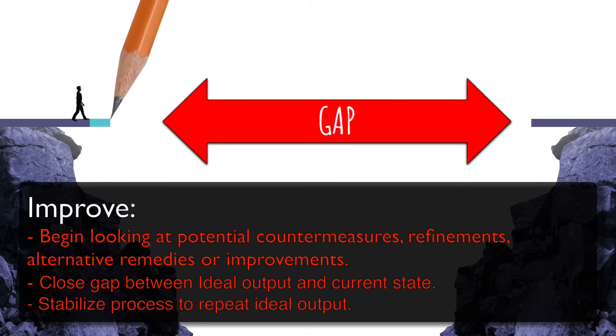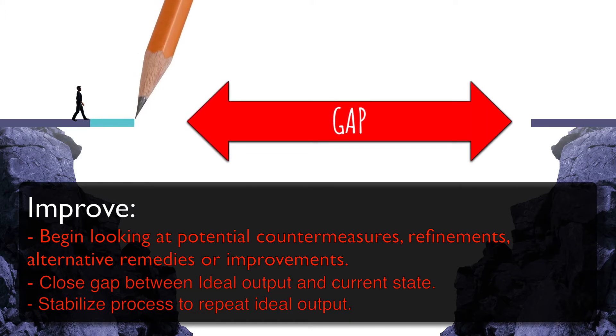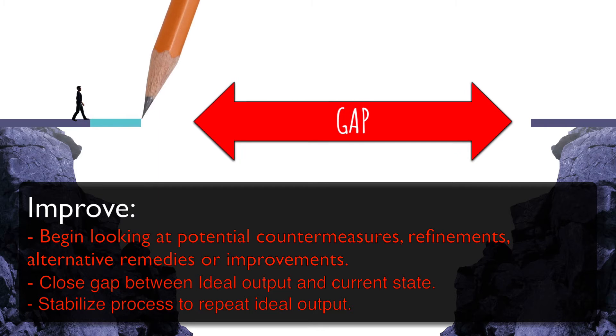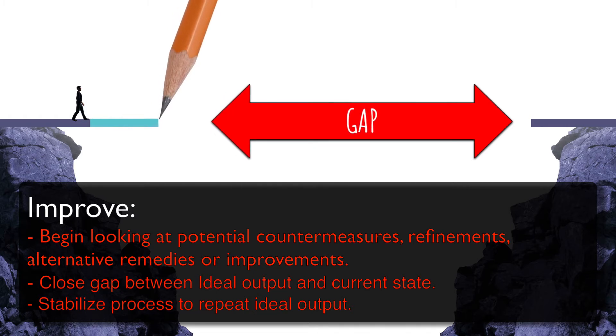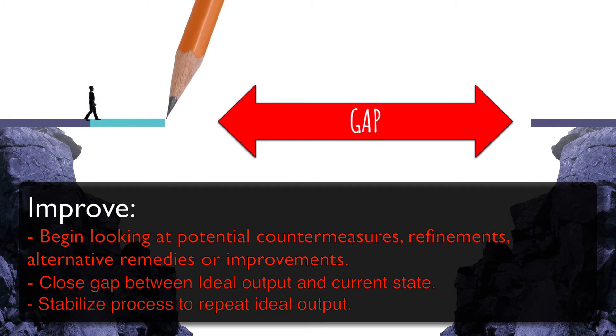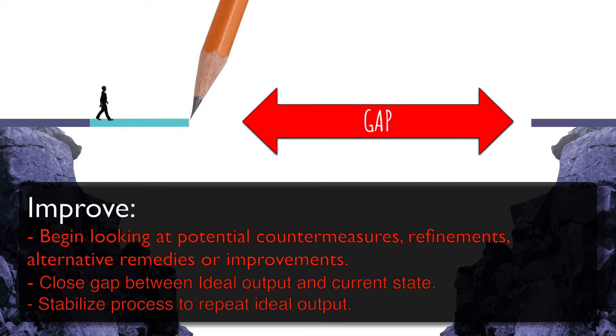Once these variables are defined, the gap between our current state and goal will be much easier to understand, and we can begin looking at potential countermeasures, refinements, alternative remedies, or improvements for the process that we are looking at. As you identify where and how variances are occurring in the process, you will be able to determine how you can improve the process with solutions that will help you achieve your original goal or solve the initial problem that you defined in a problem statement.